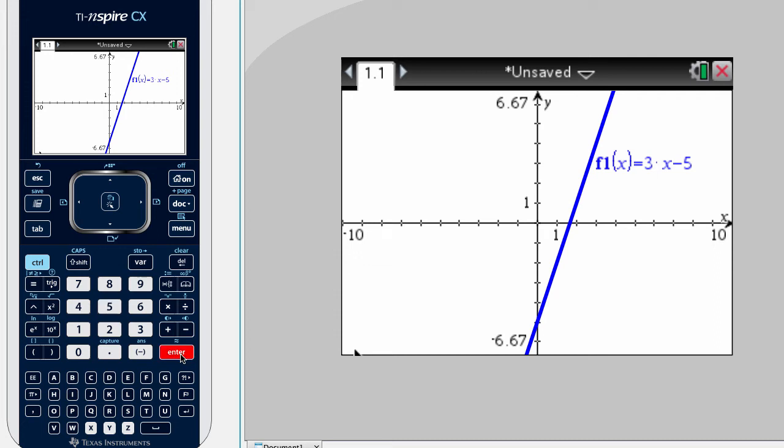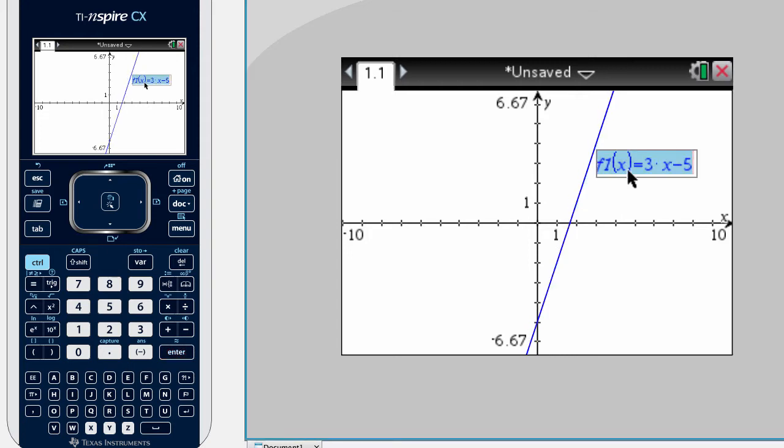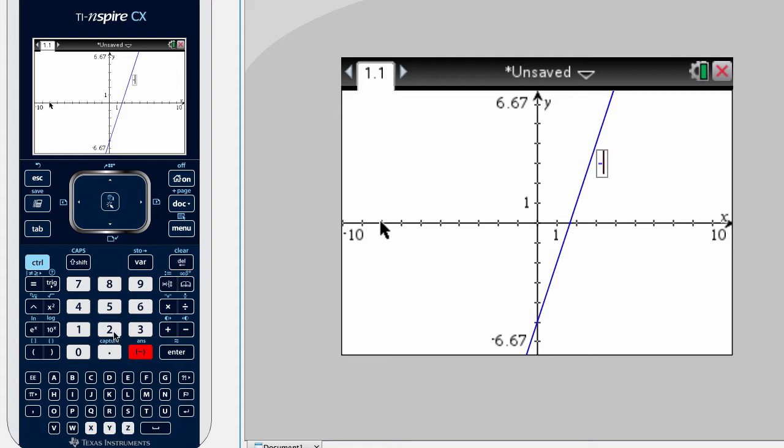Say we wanted to change that equation, we didn't like it. There are several ways to do this. The first way is you can click on the label, and then just delete it, and enter in a new equation, negative 2X plus 3. Hit the enter key, and there she is.